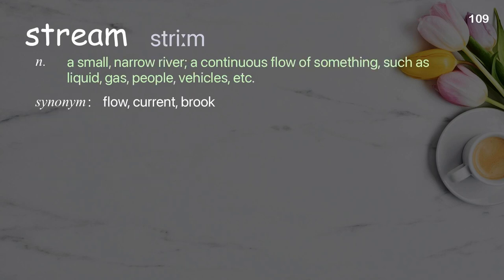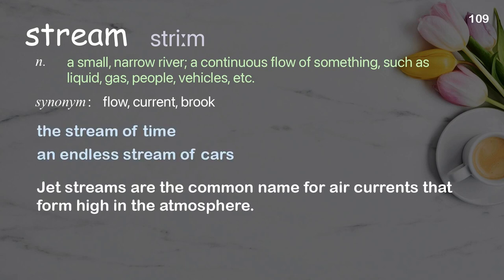Stream: A small, narrow river; a continuous flow of something, such as liquid, gas, people, vehicles, etc. Examples: The stream of time, An endless stream of cars. Jet streams are the common name for air currents that form high in the atmosphere.